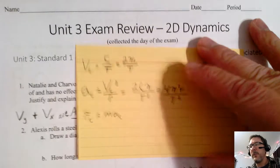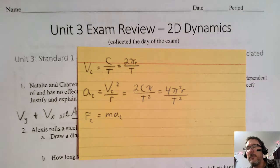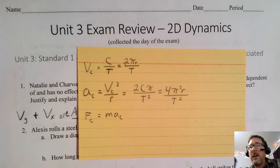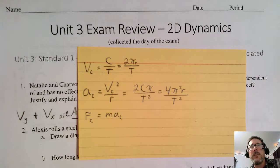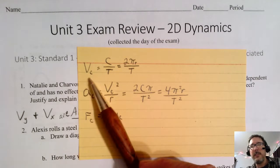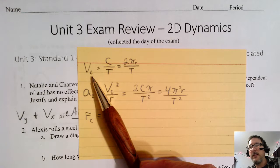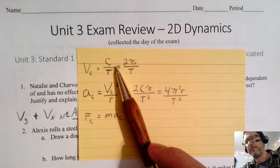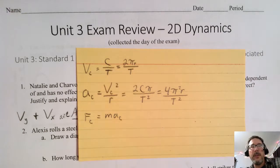On the other side of the card, I put some of the circular motion equations. I might also put some definitions — things that are going to help you. For example, as long as you know that this is velocity, centripetal velocity, circumference — you know, you might want to make a note of that. Whatever you're comfortable with.